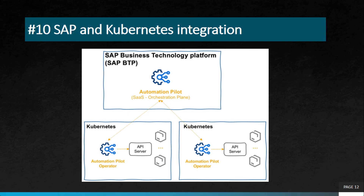The last project is SAP and Kubernetes integration. Kubernetes is an open source container orchestration platform. This integration enables businesses to manage and deploy SAP applications in a scalable and reliable manner using Kubernetes. Overall, integrating SAP systems with open source technologies can bring significant benefits to businesses, including improved data management, real-time data processing, and cost effectiveness.